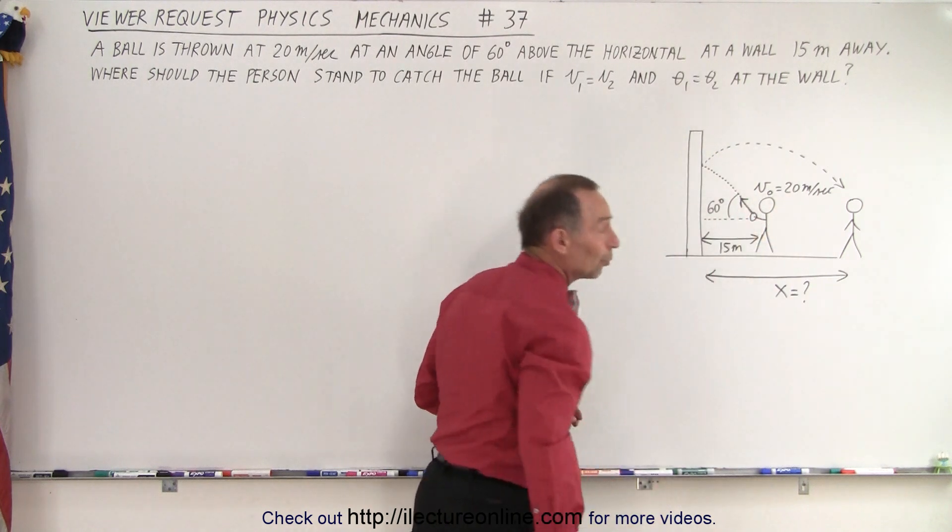So the idea is that it will not have reached maximum height when it hits the wall. It will bounce, continue to go up, eventually come back down and the person will have to stand at a different distance in order to catch the ball. So probably have to move backwards if the ball didn't quite reach maximum height. Of course, if it gets past maximum height, then the person will have to go forward to catch the ball.